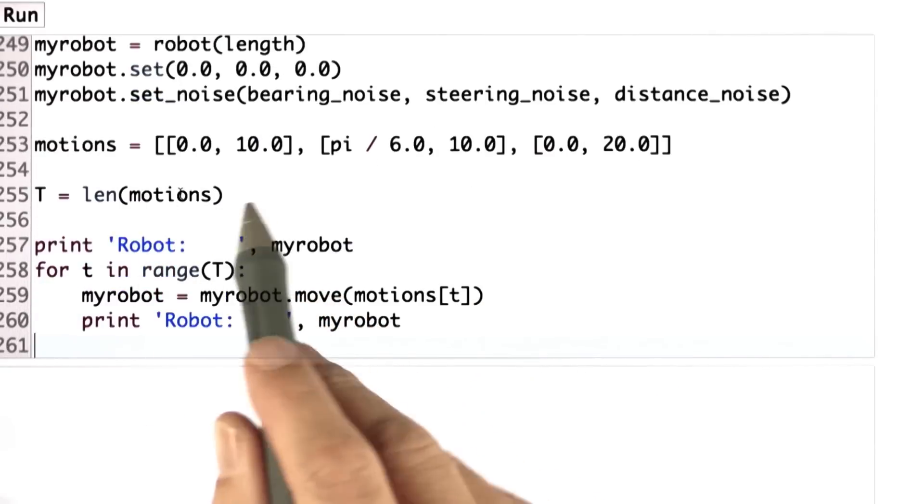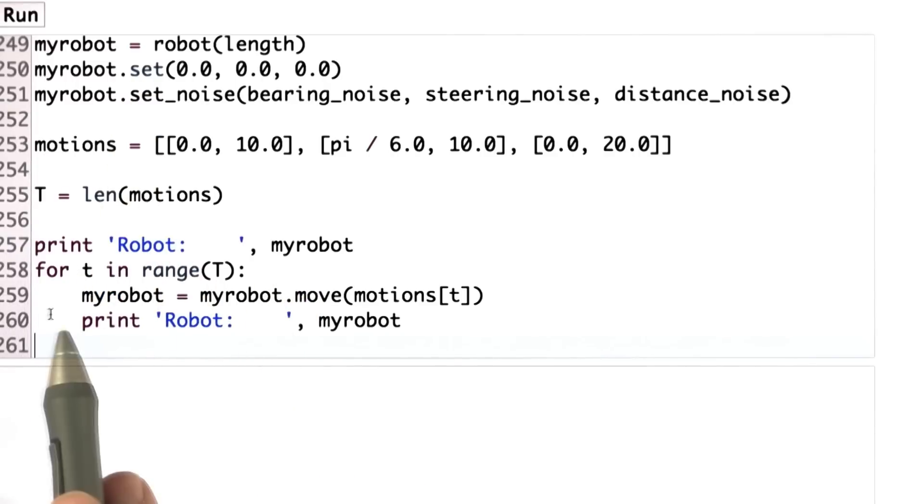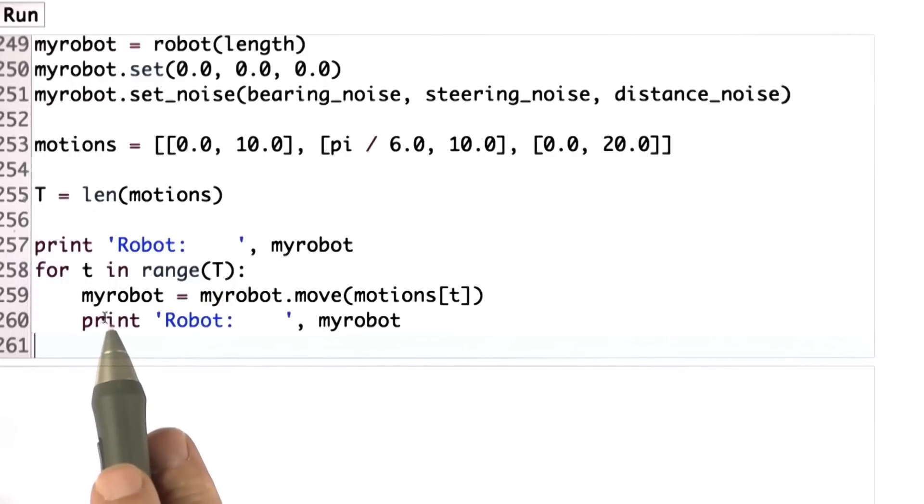Scrolling down a little bit, I also give you the code to run the robot. We've created it over here. We print the initial coordinate. And then for each of the motions in this list over here, we apply the myrobot equals myrobot.move command, and we print out the successor command.